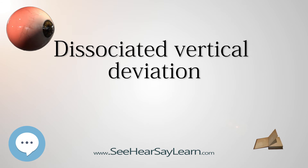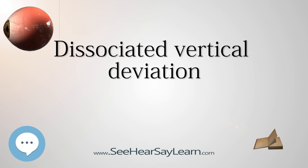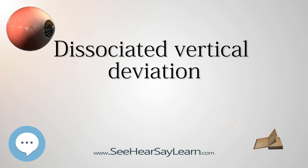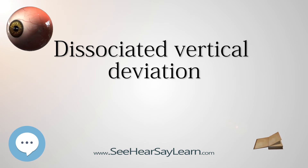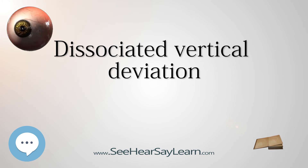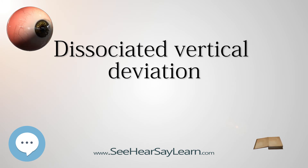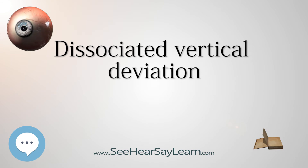Testing: A test called the Bielschowski darkening wedge test can be used to reveal and diagnose the presence of dissociated vertical deviation, although any, or no, amount of dissociative occlusion may also prompt it to occur. The patient is asked to look at a light. One eye is covered and a filter is placed in front of the other eye. The density or opacity of this filter is gradually increased, and the behavior of the eye under the cover is observed, not of the eye beneath the filter.